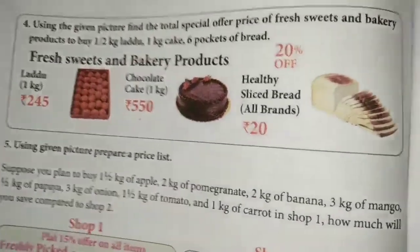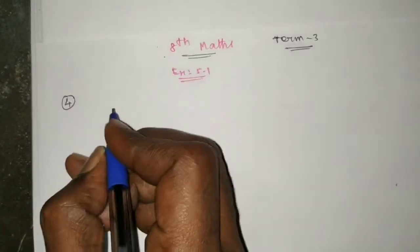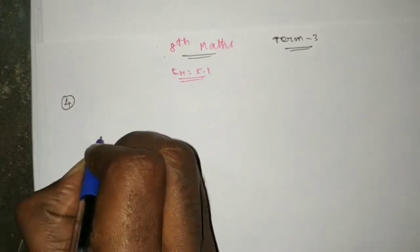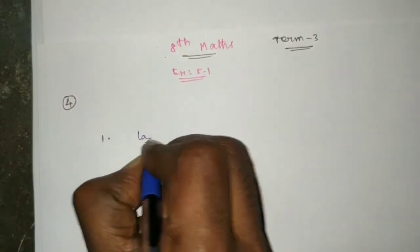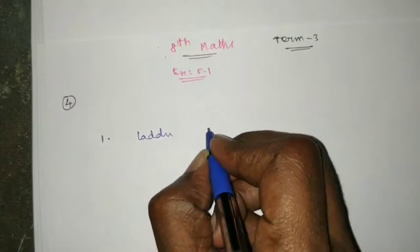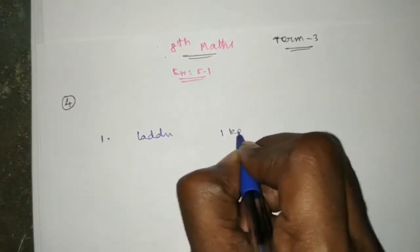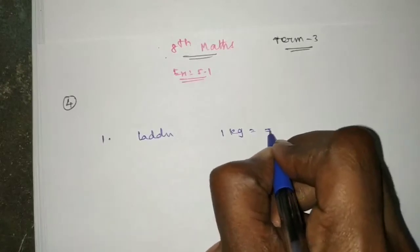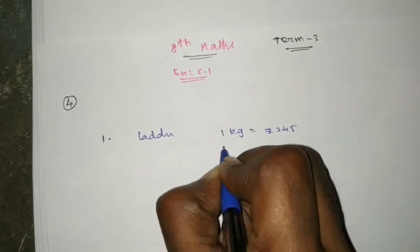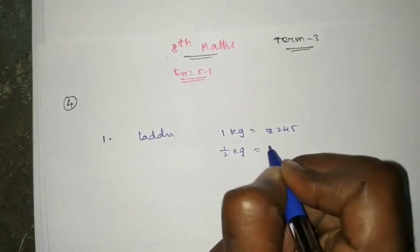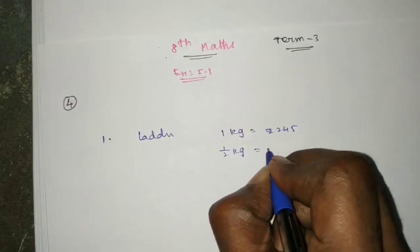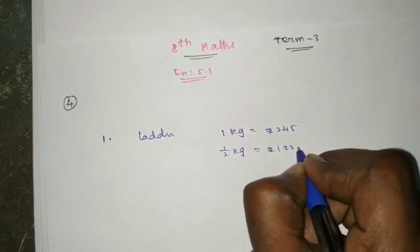We can calculate the total amount. Let's see, the first one is laddu. The cost of 1 cage is 245 rupees. If we need half cage, then dividing by 2, the cost is 122.50 rupees.